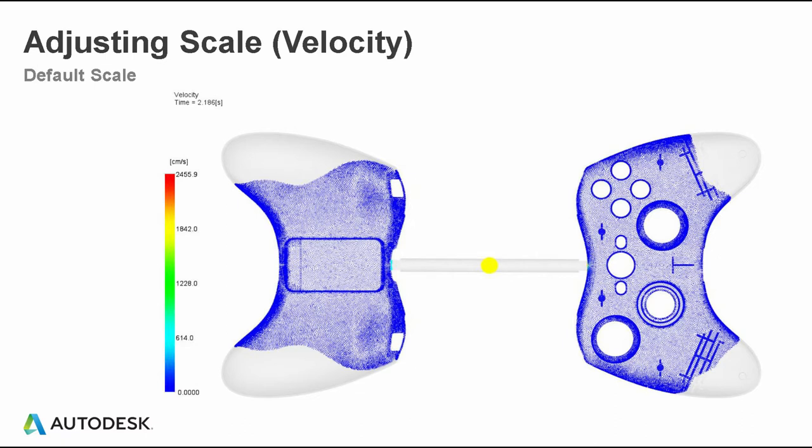The first plot I'd like to talk about is the velocity plot. By default, if we look at the default scale on the velocity plot for this one-plus-one family mold, it looks a little uneventful — everything is basically a single color. It looks like there are dots or maybe tensors, and even when we animate this, we might get a little bit of resolution at the gate but it doesn't really tell us a lot about what's going on.